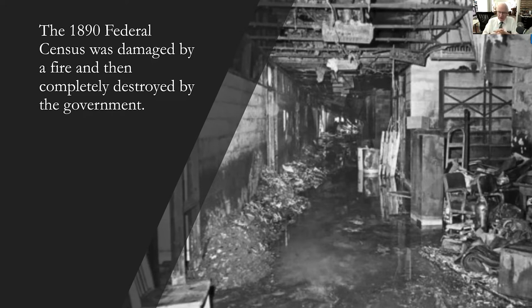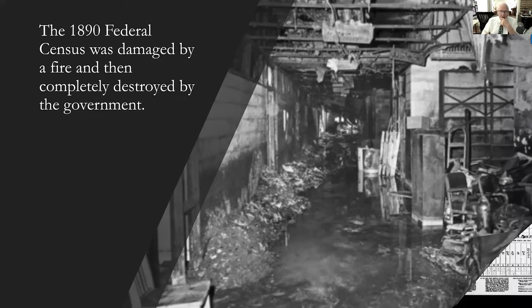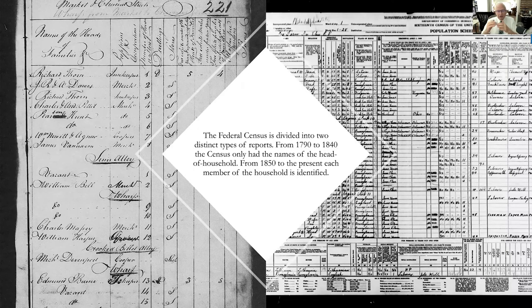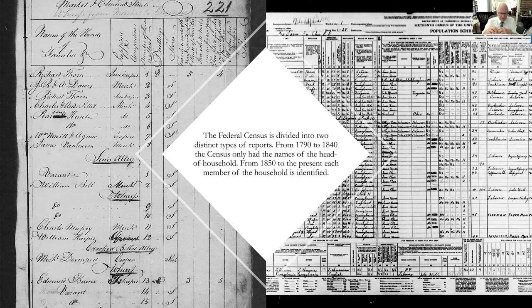Presently, all existing census records have been digitized and digital copies are available through all censuses that are currently available. The federal census records are divided into two distinct types. From 1790 to 1840, the census only had the names of the head of household and tick marks to indicate how many people were in the family.